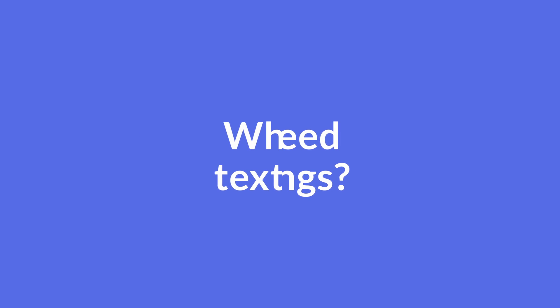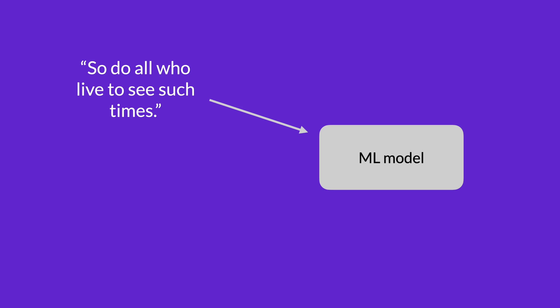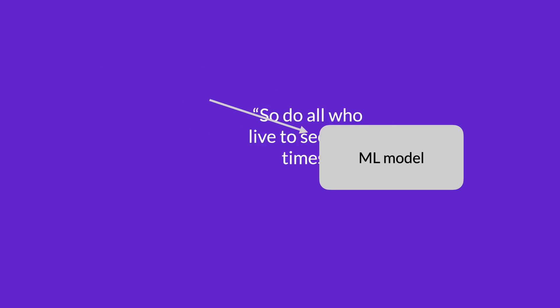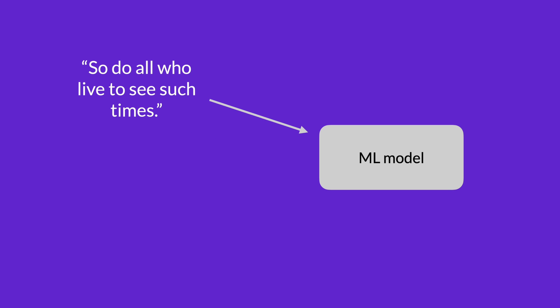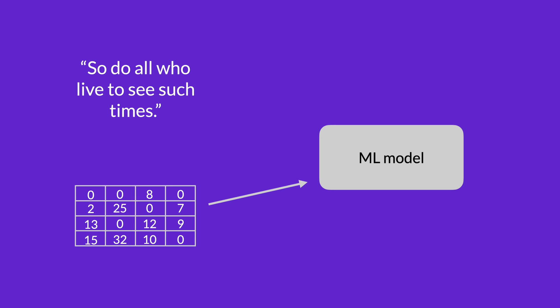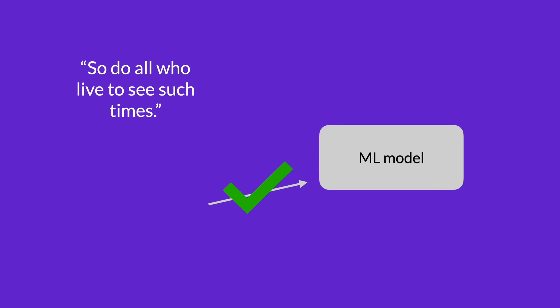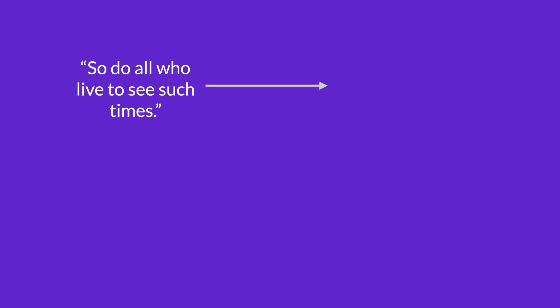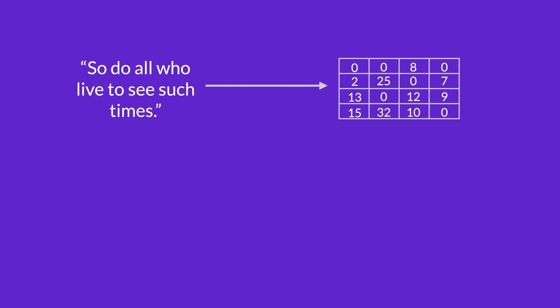The first question to arise is why do we need text embeddings at all? Well, the problem is when you're working with NLP models, you are working with text, and text is not good for machine learning models. They cannot deal with text — they don't know what to do with it — but what they know what to do with is numbers. So that's why you have to represent your text in a numbers format.